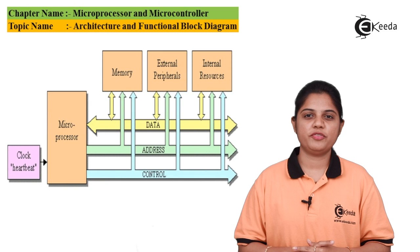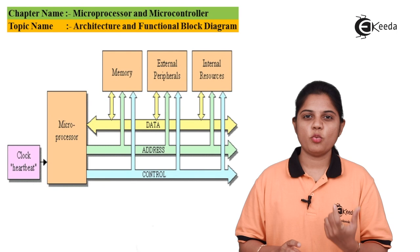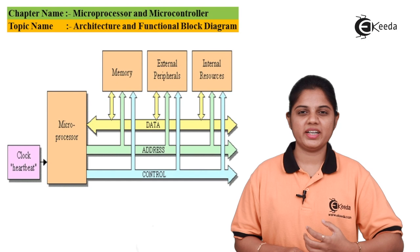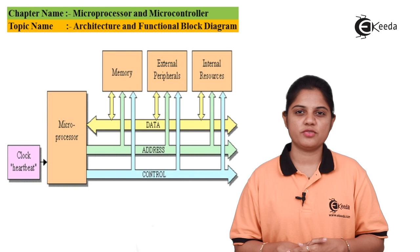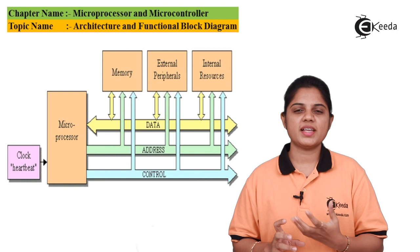The data bus is bi-directional. Why is it bi-directional? Because data should be fetched and data can be provided — that means read and write, both operations can take place over data. So for that purpose, data bus is bi-directional, whereas address bus and control bus are unidirectional.